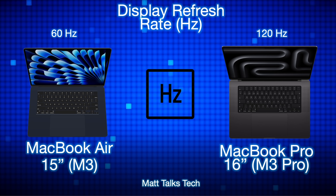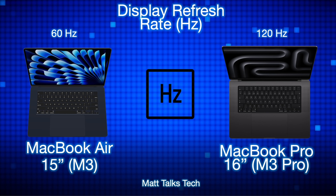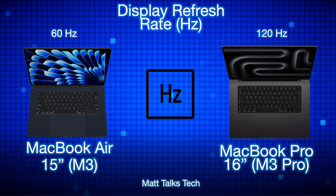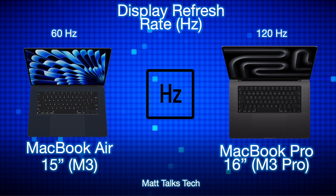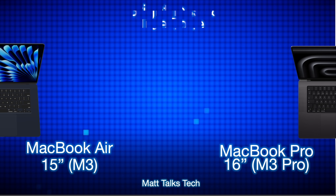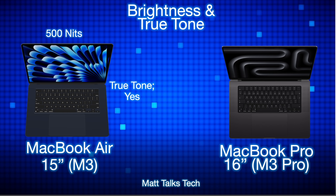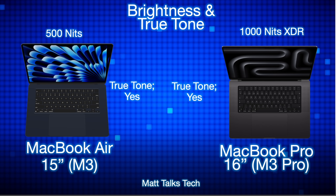For the display refresh rate, the MacBook Air has a standard 60Hz panel — still one of the best 60Hz displays on the market. The MacBook Pro offers ProMotion at 120Hz, though you do need apps specifically coded to utilize it. Without that, it defaults back to 60Hz.